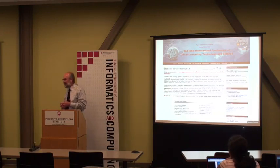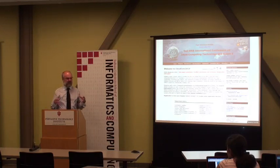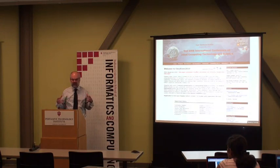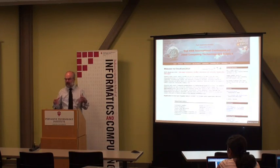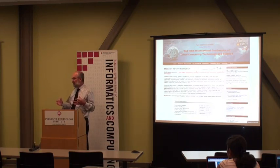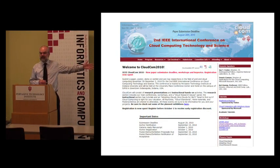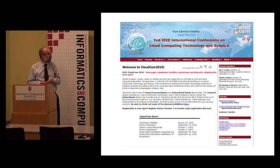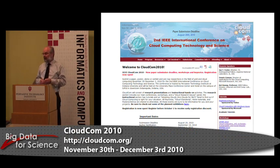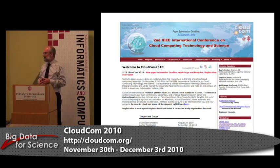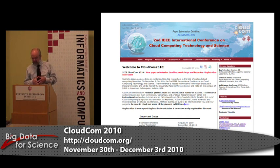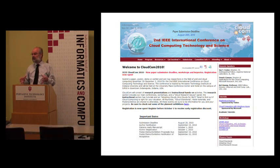FutureGrid is very much intended to put rigorous computational science back into a lot of these discussions — to get cloud computing, grid computing, and scalable MPI computing to a point where we can have sensible discussions about what matters in the long run. One of the best places to see papers on these topics is CloudCom 2010. The call for papers is open, it's being organized by the same group behind this virtual school, and it will be held November 30th to December 3rd in Indianapolis. Paper submission is August 20th.